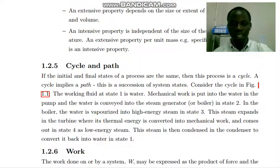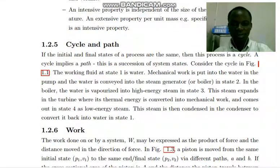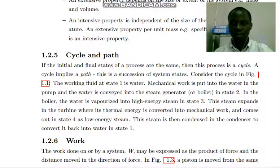A cycle and a path - what's the difference? If the initial and final state of the process are the same, then this process is a cycle. A cycle implies a path, which is a succession of system states.